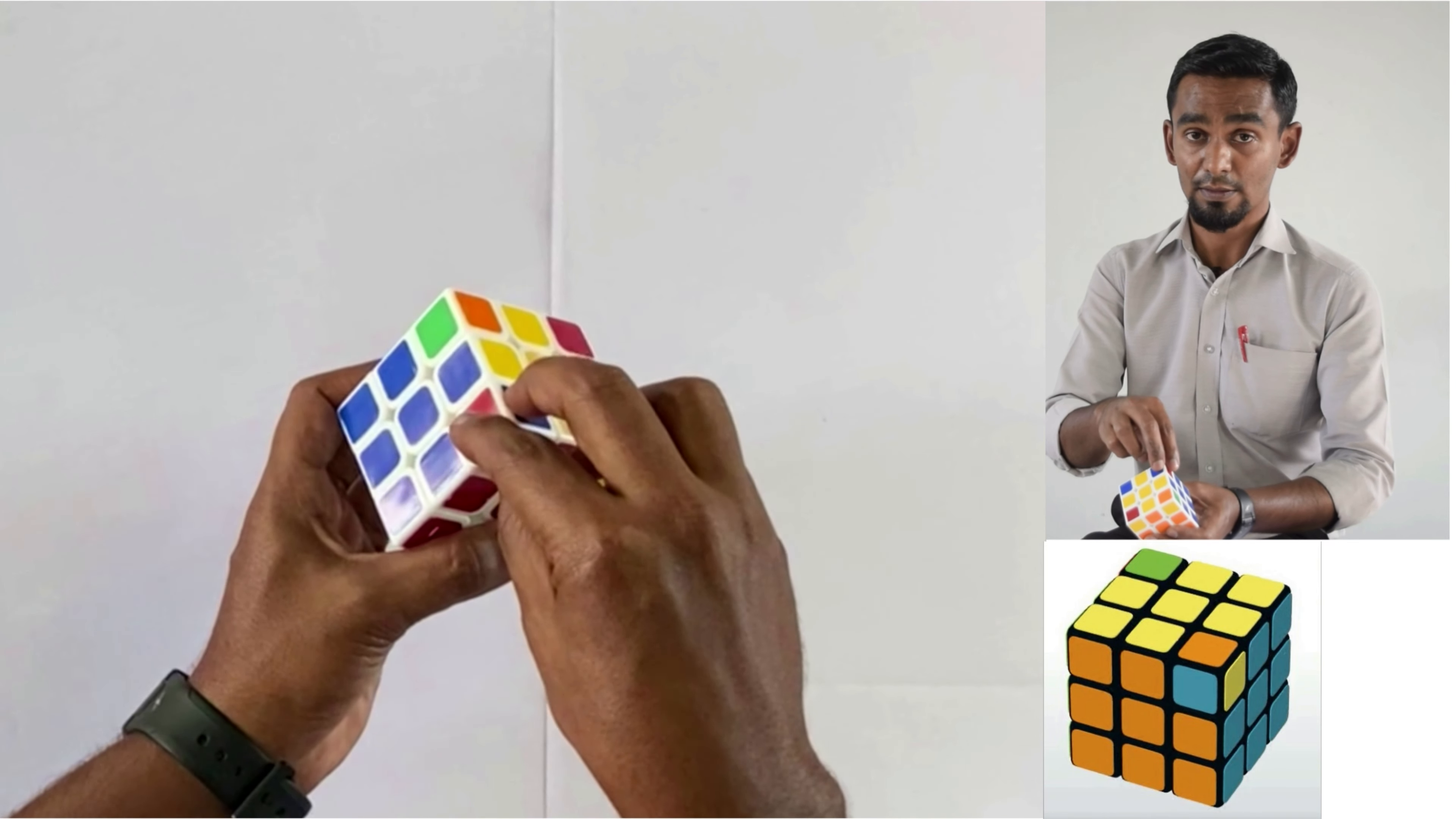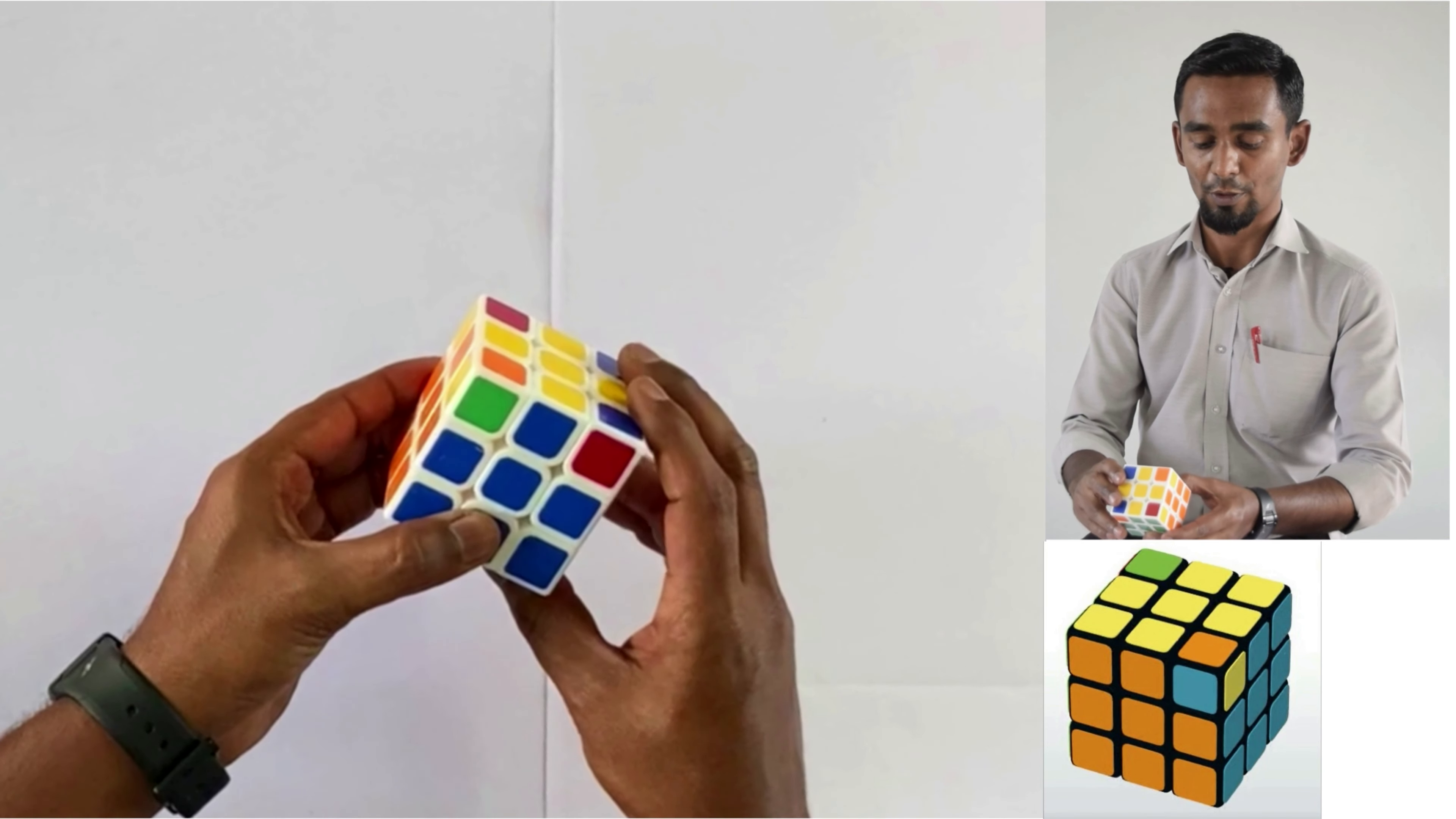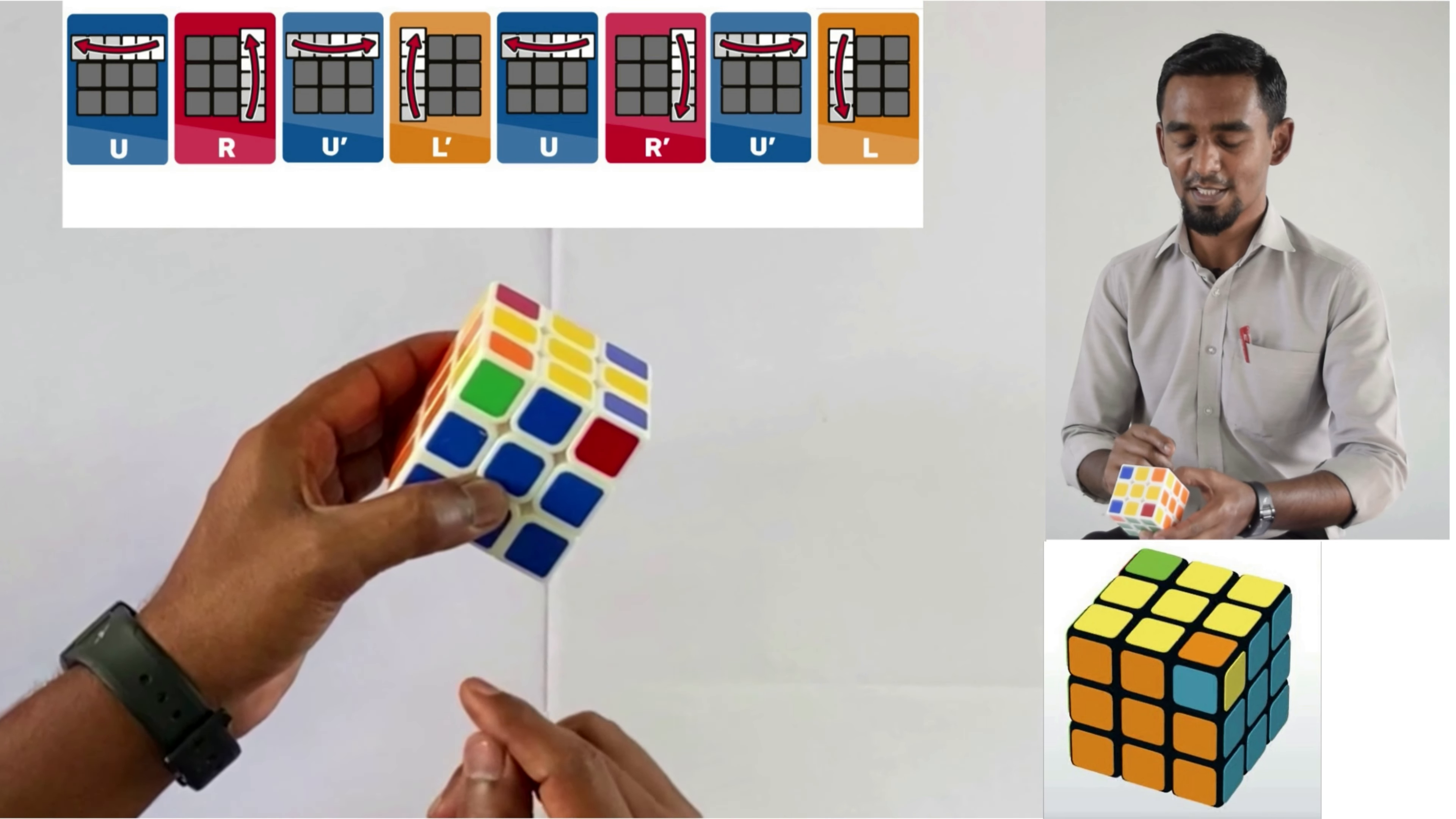So for the corner cell, we are going to position the right corner. Now we are going to apply the formula. For step 6 it is going to be a different formula, not the same formula which we applied for step 5. Now please listen, the formula for step 6.